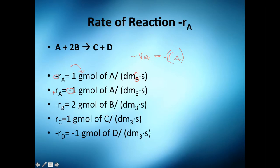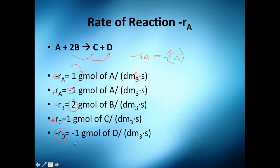For B: two grams of B are disappearing to form C or D. For C, it's a product — that's why its rate is positive: one gram of C per cubic decimeter per second. And the rate of reaction of D is negative because D is a product being produced, not consumed.